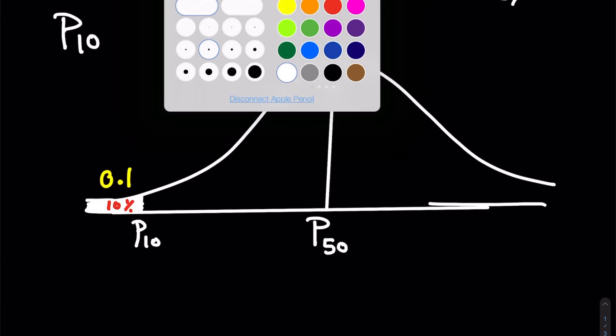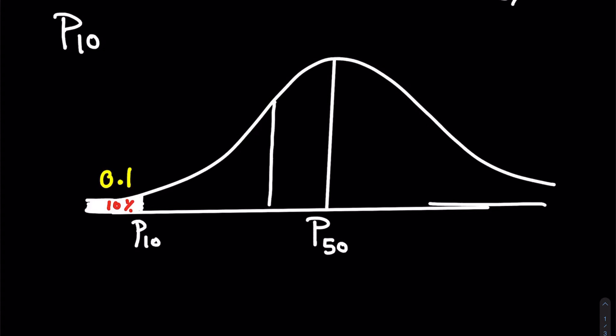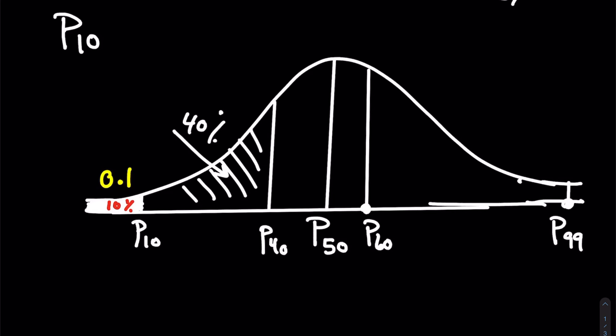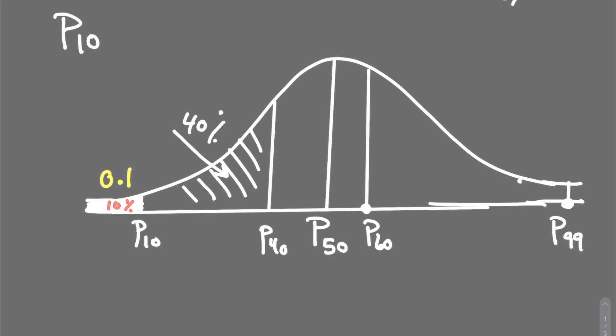If I wanted to draw P40, P40 is somewhere there, that means the bottom 40%. This will be P60. This will be P99, or whatever. So that's how the P's will propagate under a normal distribution. All right guys, I'll see you on the next lecture for Module 4.